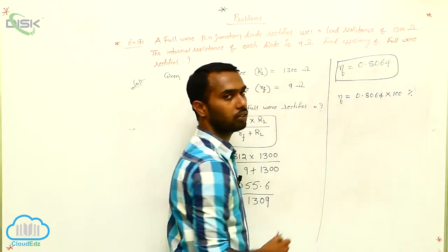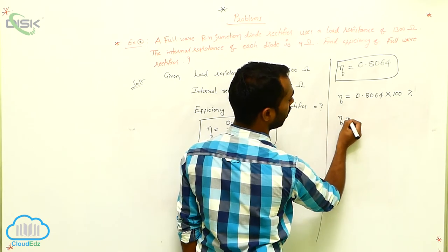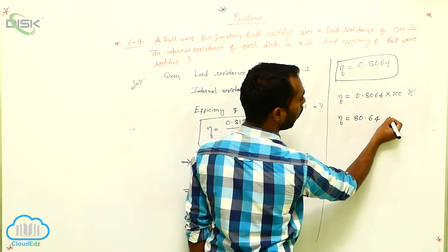In percentage, you get the answer. So, remove two zeros, two zeros. So, eta is equals to 80.64 percentage.